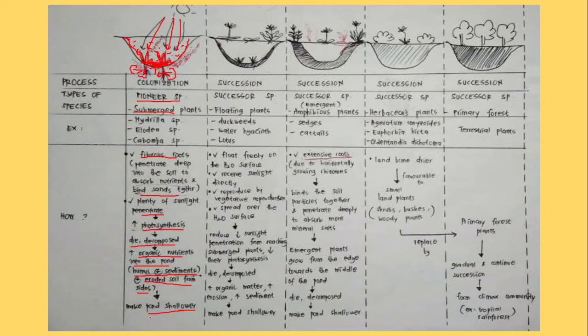This situation is not suitable for pioneer species but favorable for first successor species that is floating plant, plants that float. Such as duckweeds, lotus. And this floating plant floats freely on the water surface. These floating plants will reproduce by vegetative reproduction and spread over the water surface.